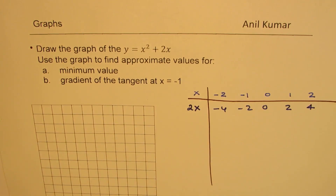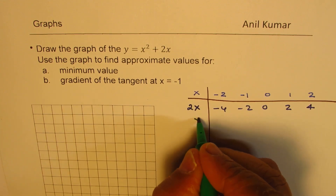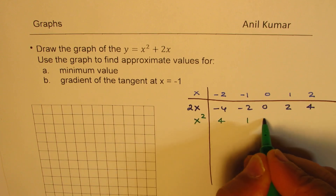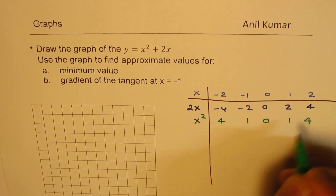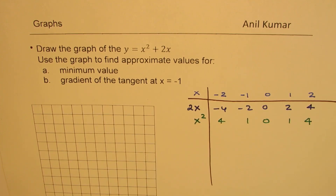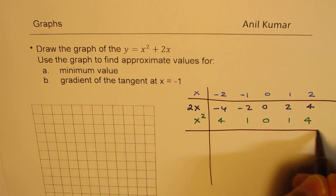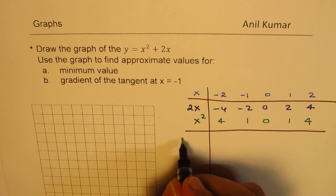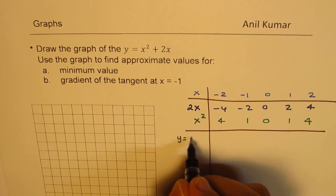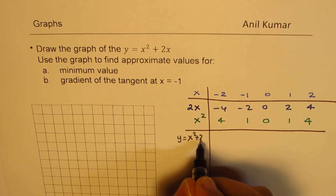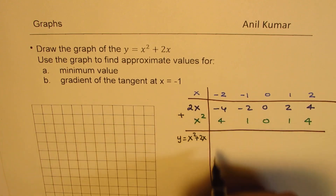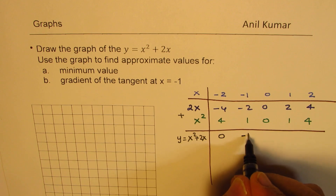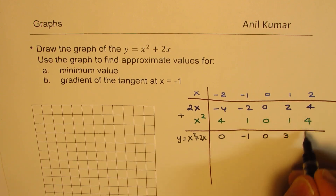Now let's calculate the value of x squared. Squaring them, we get positive 4, 1, 0, 1, 4. The y value is actually the sum of these two. So to calculate y, which equals x squared plus 2x, we add these values. When you add them, you get 0, minus 1, 0, 3, and 8.